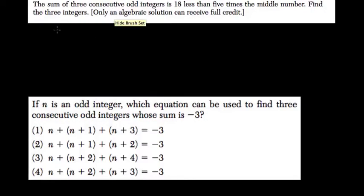The sum of three consecutive odd integers. So if x is an odd integer, then if we add 2 to that and then add 4 to that, we still have the next two odd integers.